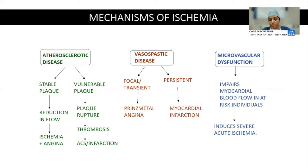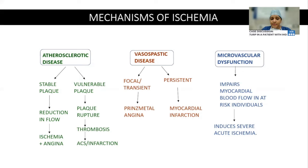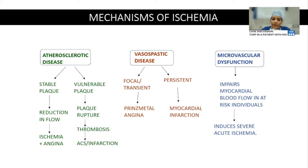Mechanisms of ischemia based on pathophysiology: in atherosclerotic disease, a stable plaque causes continuous reduction in blood flow producing ischemia or angina, while a vulnerable plaque with an unstable cap can rupture, causing bleeding, thrombosis, and an acute coronary event. In vasospastic disease, persistent vasospasm causes myocardial infarction while transient vasospasm causes Prinzmetal or variant angina. Microvascular dysfunction impairs blood flow and causes severe acute ischemia.